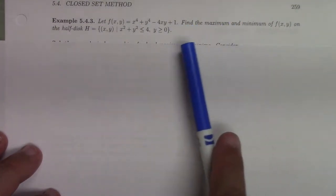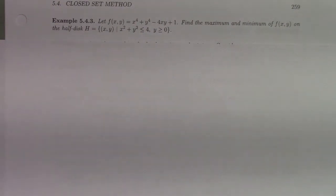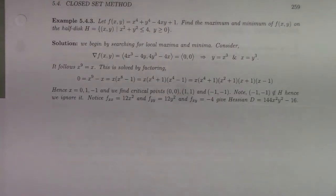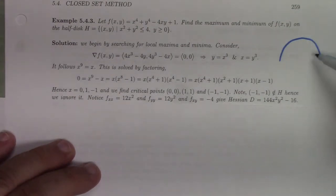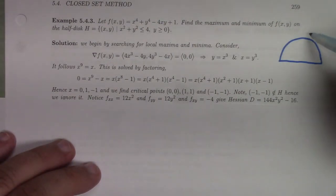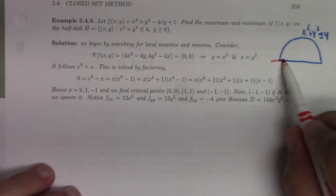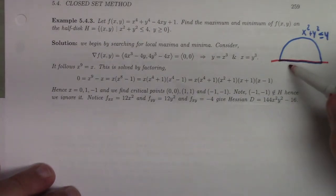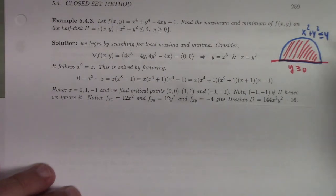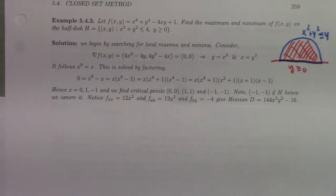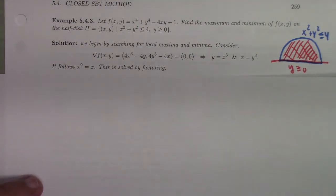This is a function x to the 4th plus y to the 4th minus 4xy plus 1. Find the minimum and maximum on the half disk. The half disk is x squared plus y squared less than or equal to 4, and y greater than or equal to 0. That puts you up in here—this is the region of interest. I'll begin by looking for local mins and maxes. In other words, I'm looking at the interior.